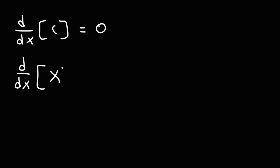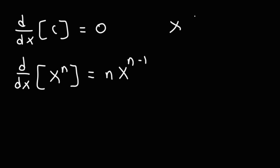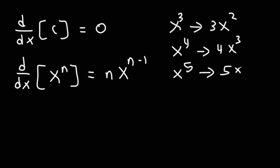The next formula you need to know is the power rule, or the derivative of a power function. Here we have a variable raised to a constant. It's going to be that constant times the variable raised to the n minus 1. For instance, the derivative of x cubed is 3x squared, the derivative of x to the fourth is 4x cubed, and the derivative of x to the fifth is 5x to the fourth. That's how you can employ the power rule to find the derivatives of functions like this.